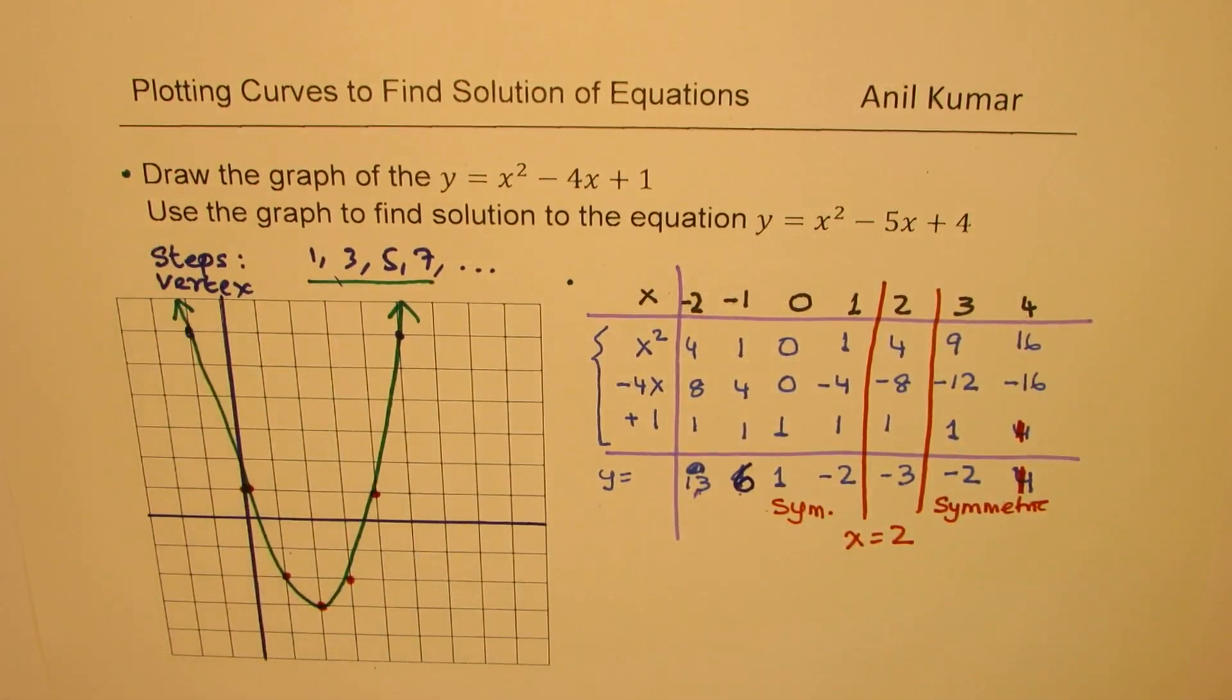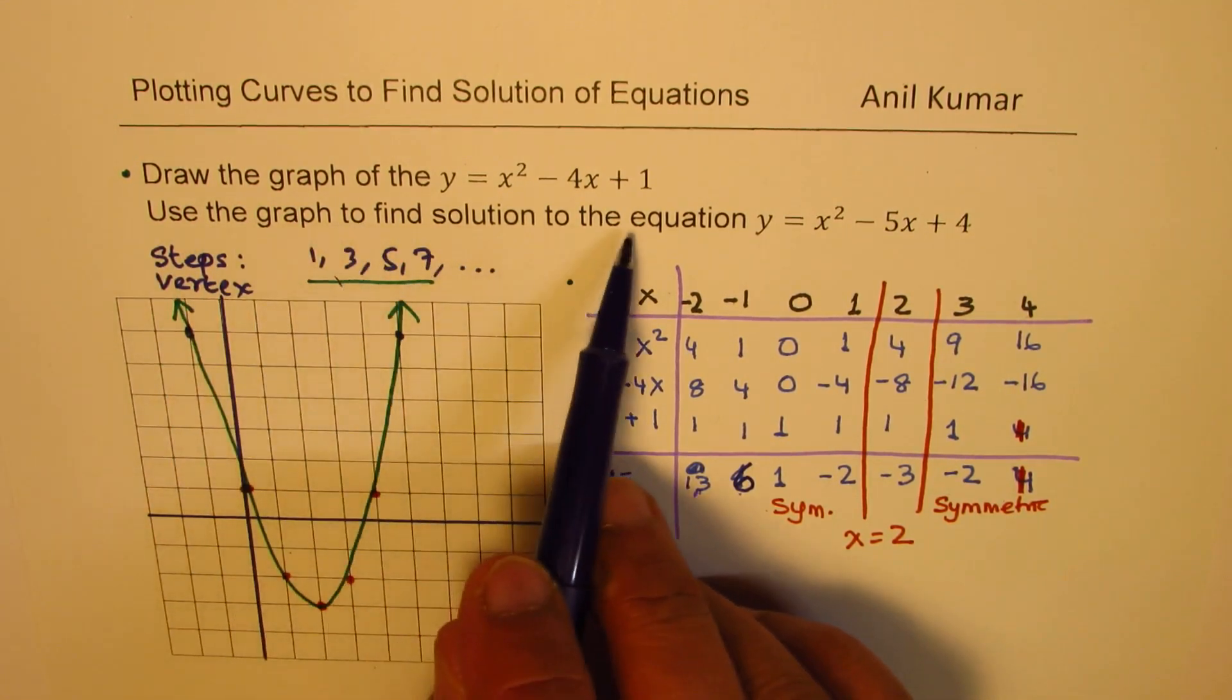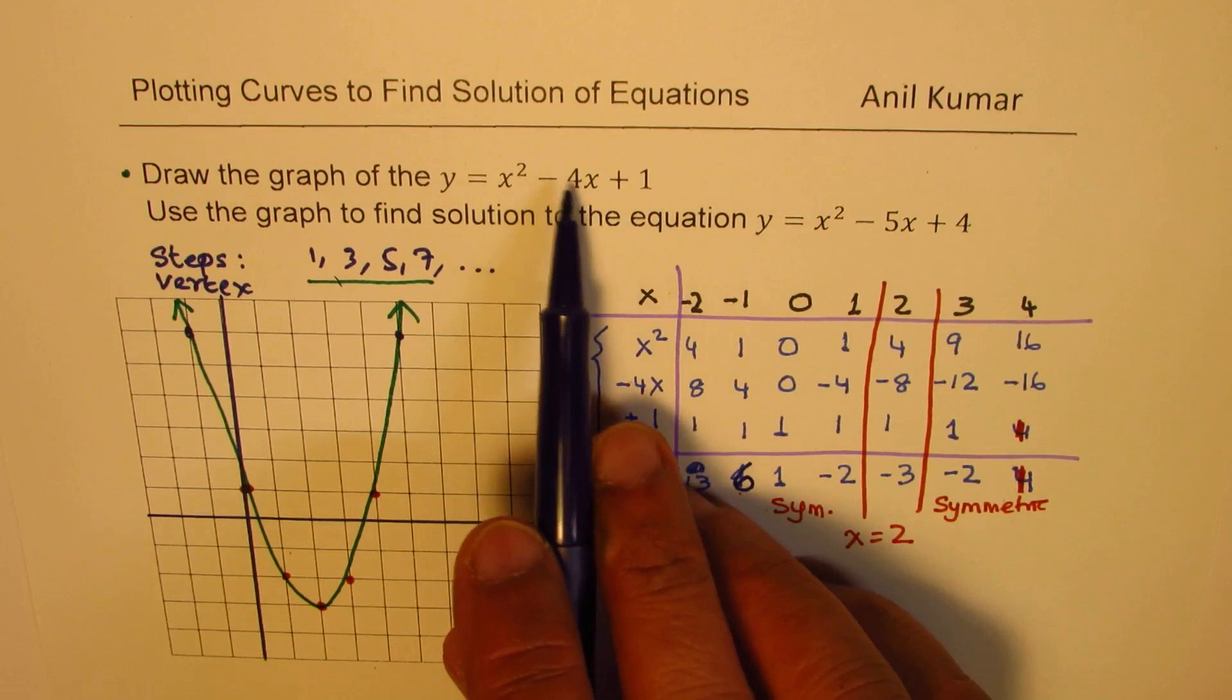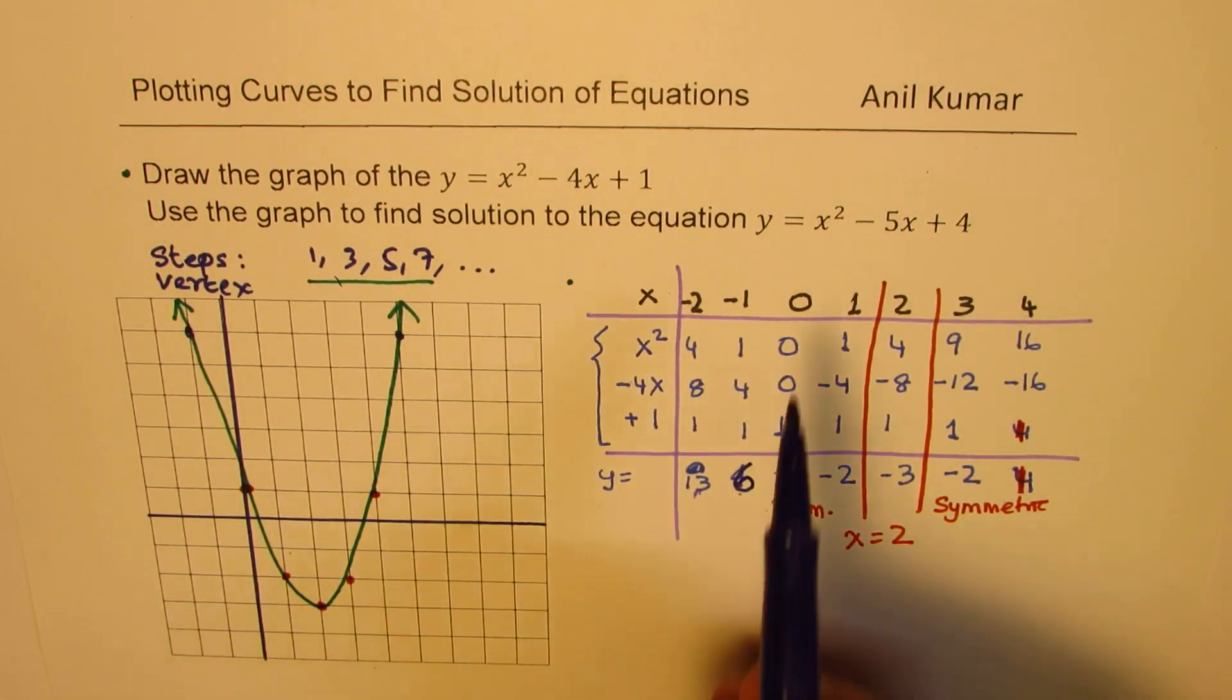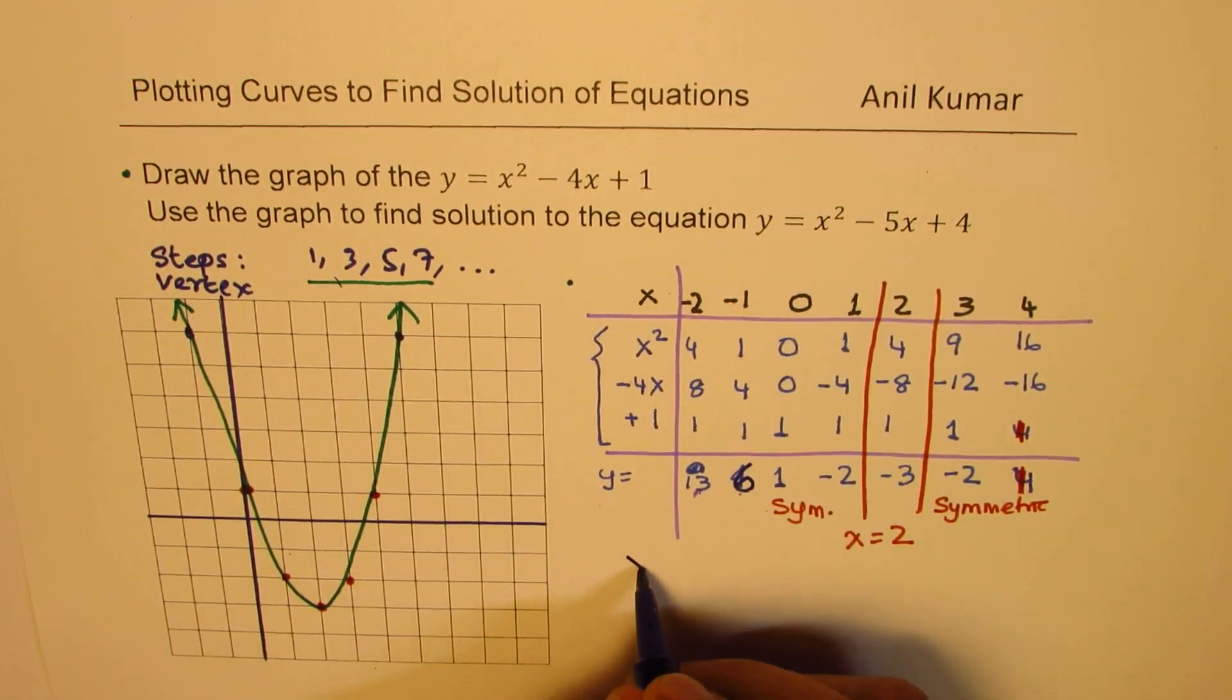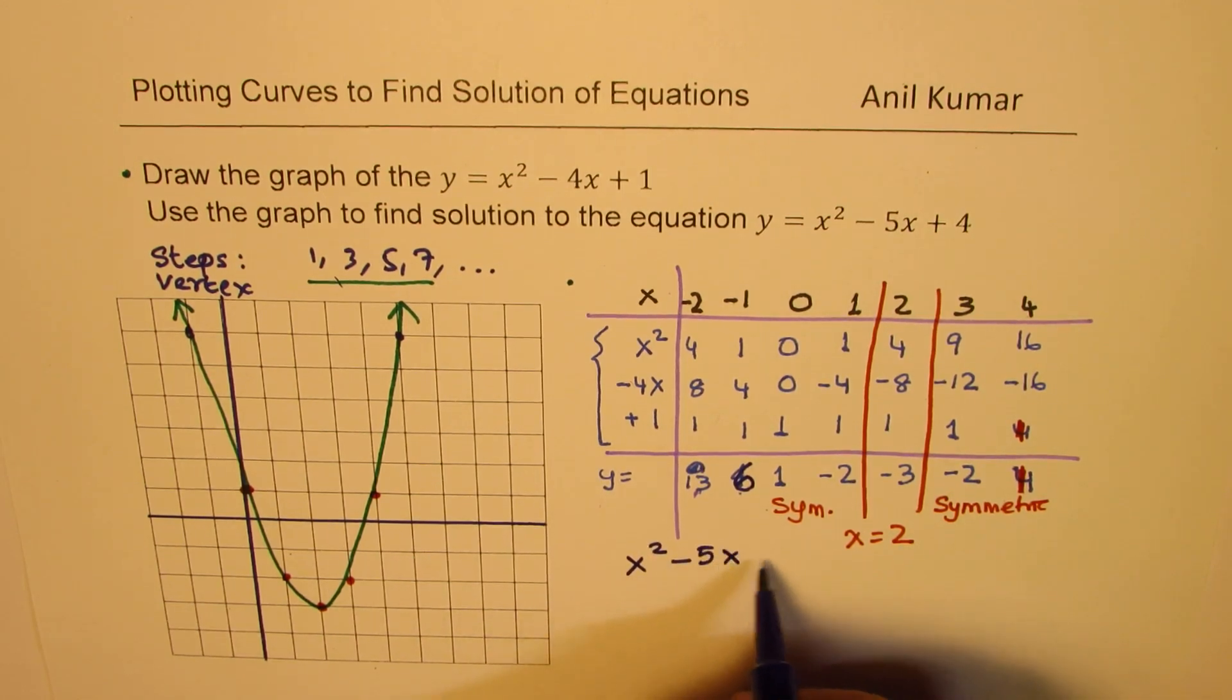Now, second part to this question is, use the graph to find solution of this particular equation. Now these two equations are slightly different. So what equation we have to find solution for is x squared minus 5x plus 4. That is the equation which we want to figure out.